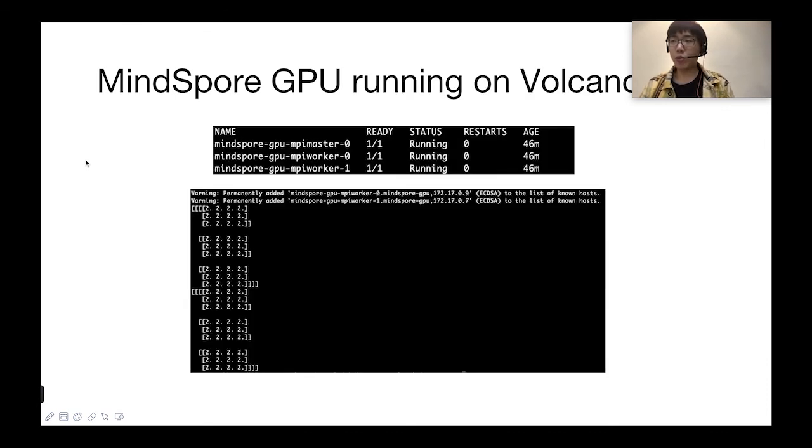These are screenshots of the output result. As you can see, we have three parts: MPI master 0 and two MPI workers, worker 0 and worker 1. The logs from the MPI master, the output is a 6x3x4 dimensional array, which is two times the original output because we have two workers. By now, we successfully run the MindSpore GPU on Volcano in a Kubernetes cluster.